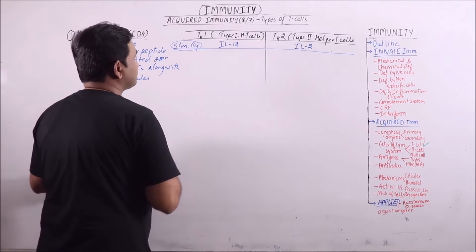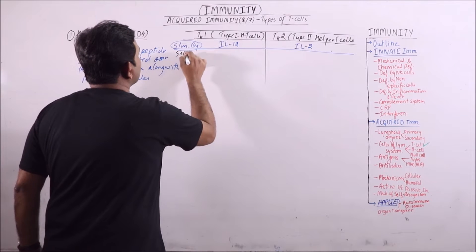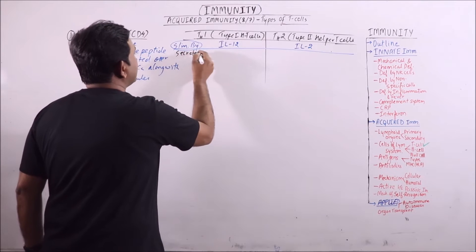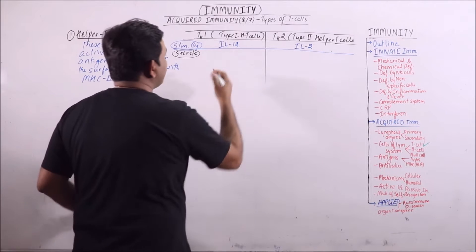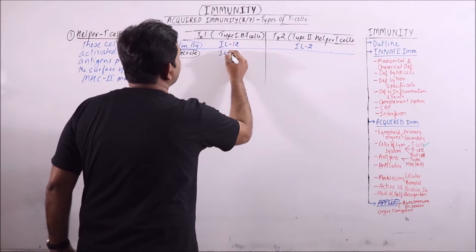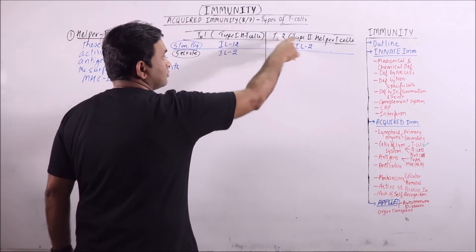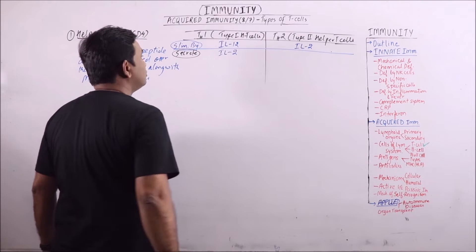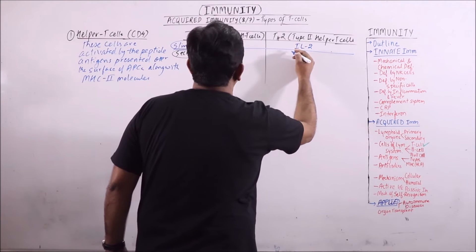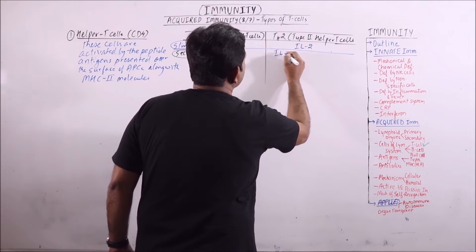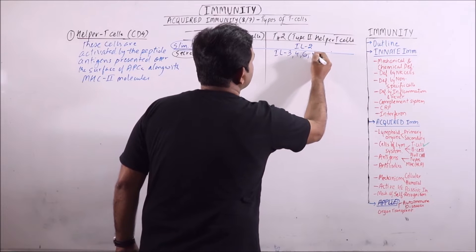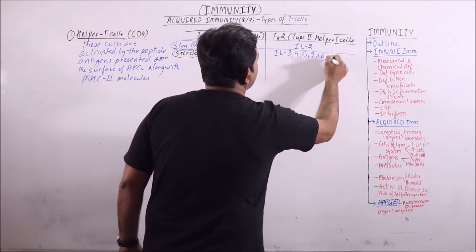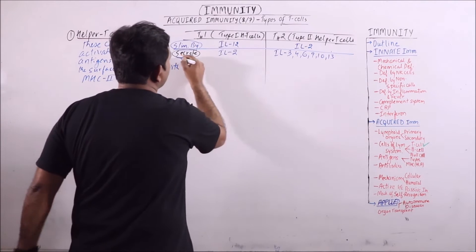When activated, Th1 cells secrete interleukin-2 which stimulates the type II helper cell, while Th2 cells secrete interleukin-3, 4, 6, 9, 10 and 13.